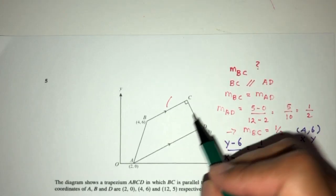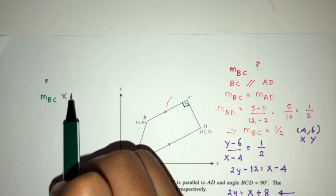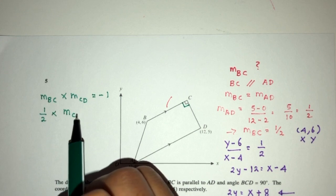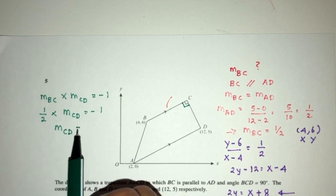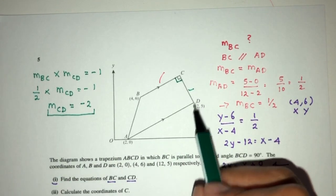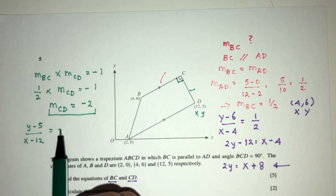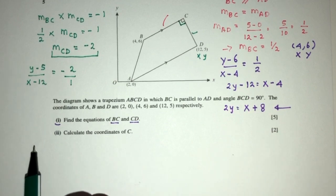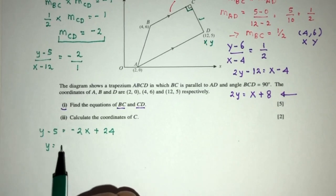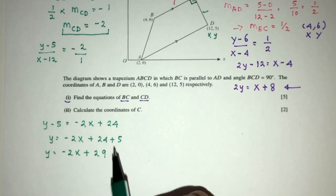Now let's move on to finding the equation of CD. Because it is at a right angle to BC, the gradient of BC multiplied by the gradient of CD has to give you minus 1. So if BC has gradient one half, and we multiply by the gradient of CD to get minus 1, it means the gradient of CD has to be minus 2. We have a passing point which is (12, 5) — that will be X and the Y value. So Y minus 5 over X minus 12 equals minus 2. Cross-multiplying: Y minus 5 equals minus 2X plus 24, so Y equals minus 2X plus 29. This will be my equation for the line CD.